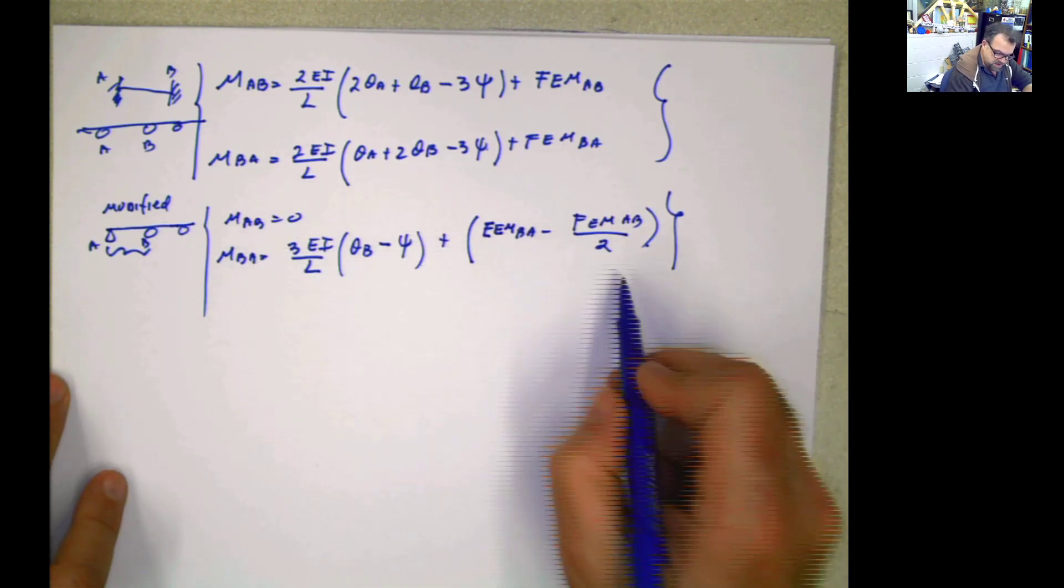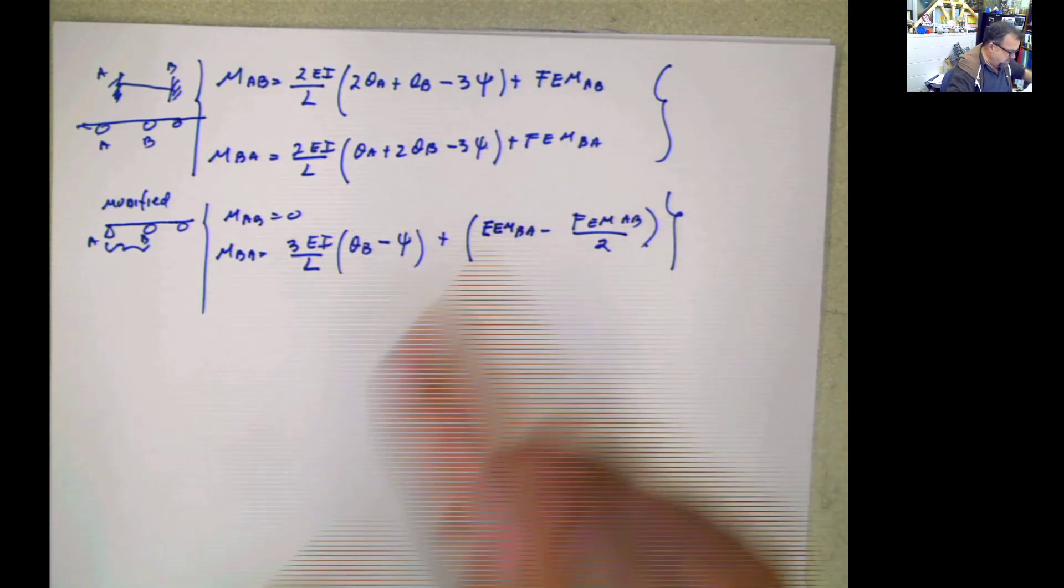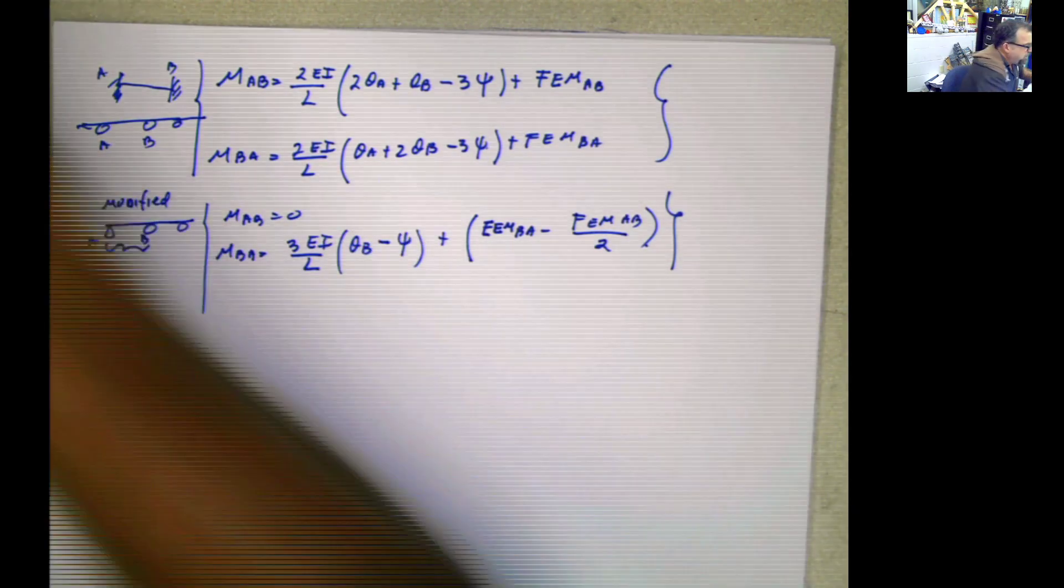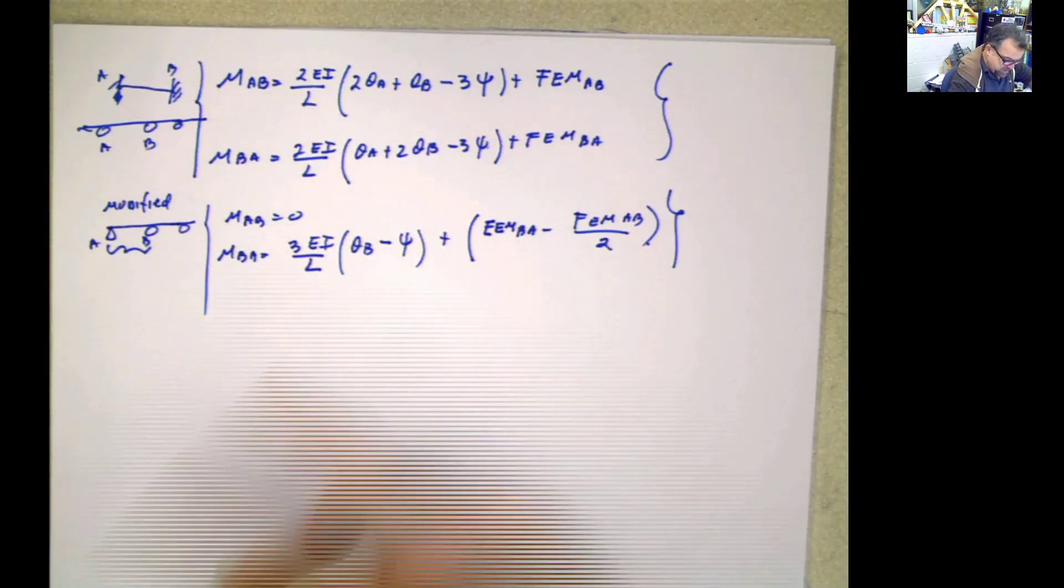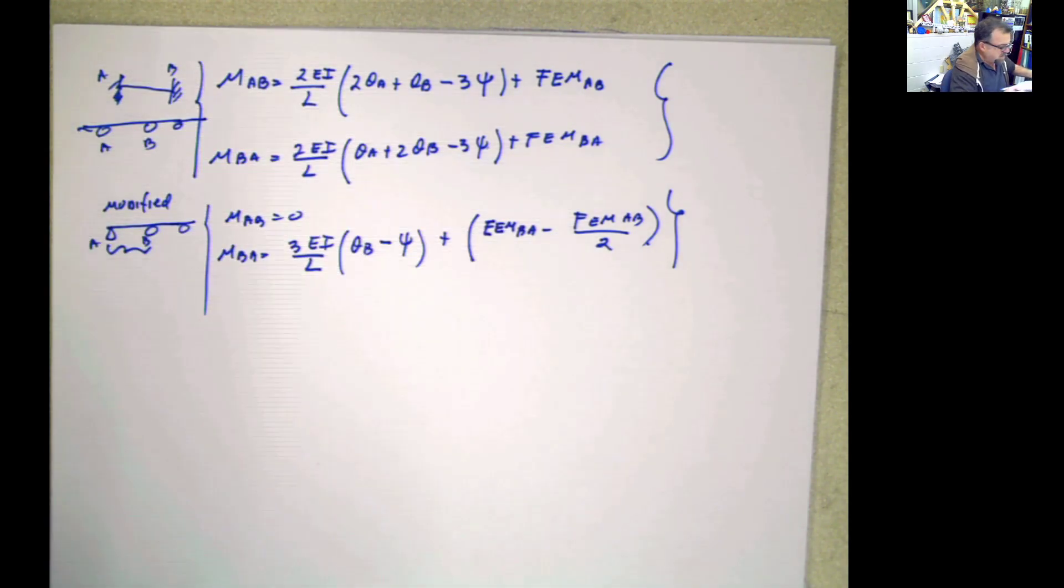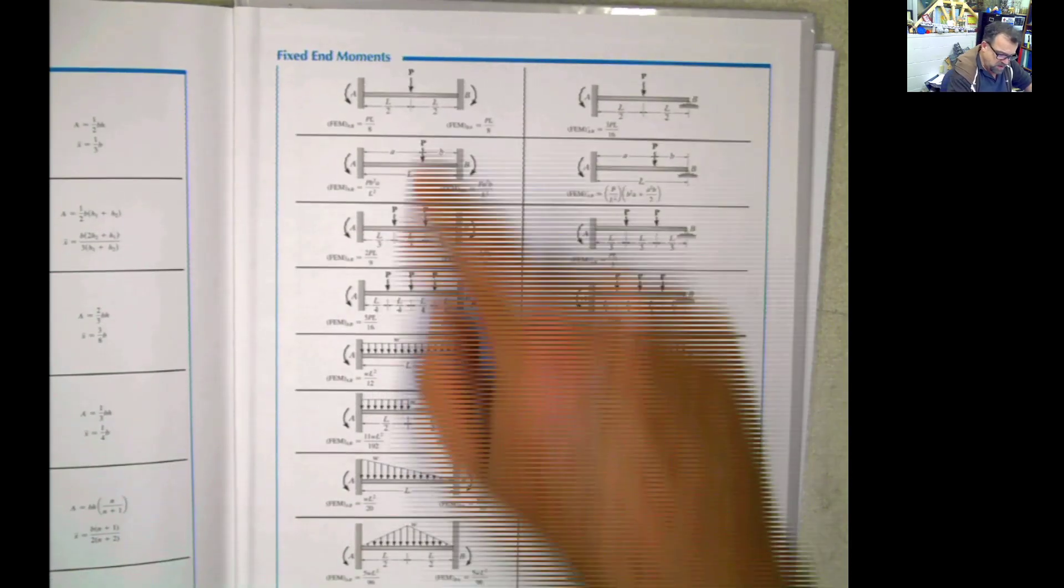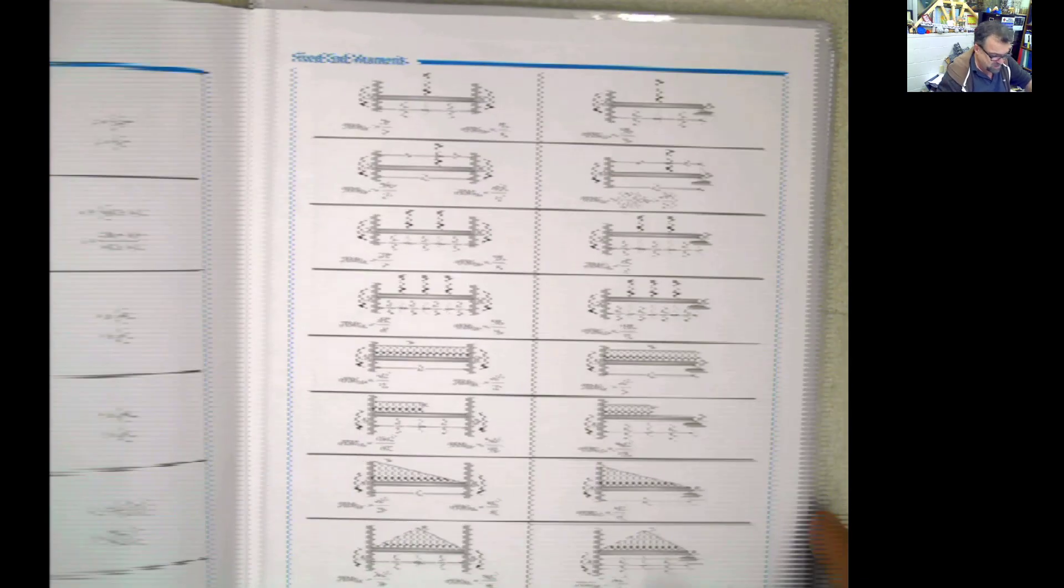The fixed end moments are those moments for the particular type of loading condition. I'm looking for as this will behave, this is just fixed and fixed like that. And you can find that in the back cover of basically every single structural analysis book. Those are the fixed end moments here. This is what it refers to.